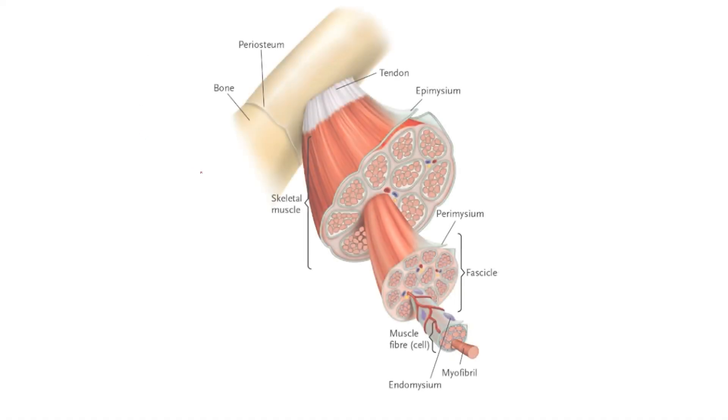The primary reason why muscle cells get bigger — which is called hypertrophy — is because the muscle fibers inside the muscles get bigger, not because of cell division. That also depends on how you train and which muscle fibers you target; fast twitch muscle fibers can get much bigger than slow twitch fibers. Looking at the muscle structure, we can see a bone covered by connective tissue called the periosteum, and the muscle is connected to the bone by a connective tissue called a tendon.